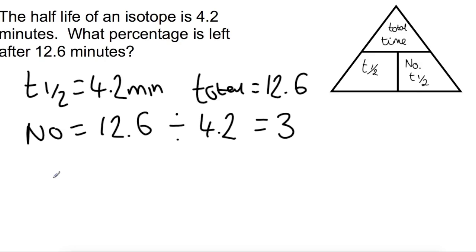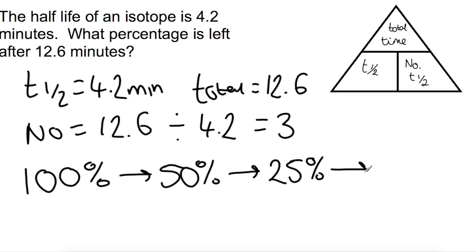That means you need to have three arrows. We're looking at percentages, so we're going to start at 100. After the first half-life, we will be at 50%. After the second half-life, we will be at 25%. And after the final half-life, we will be at 12.5%. And that is your final answer.